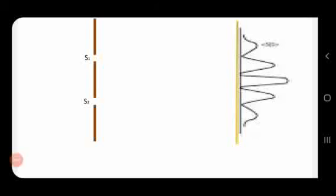This is similar to what you may have studied about double slit diffraction. The double slit diffraction pattern has the form of an interference pattern with alternating maxima and minima.